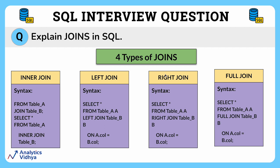On the other hand, in a right join, all the rows from the right table are returned, but only the matching rows from the left table where the join condition is fulfilled. Here is the syntax for the right join.